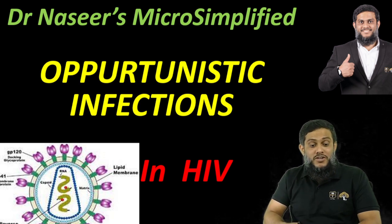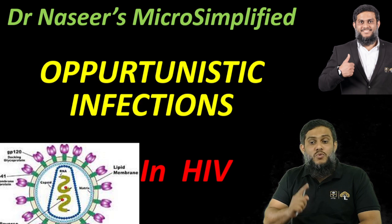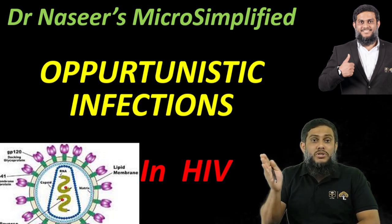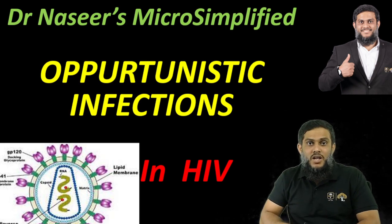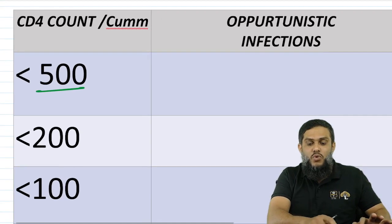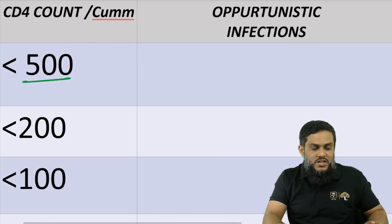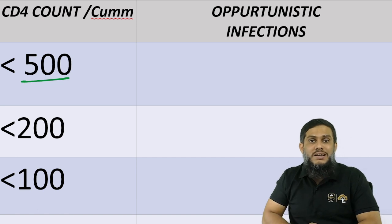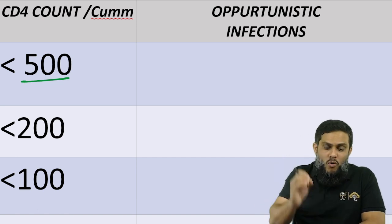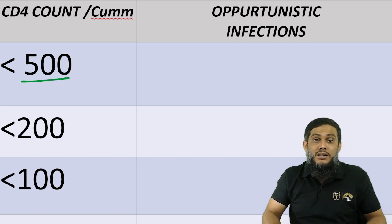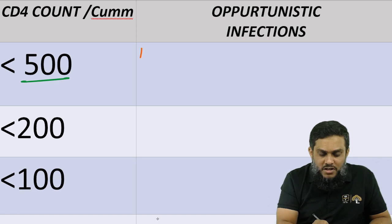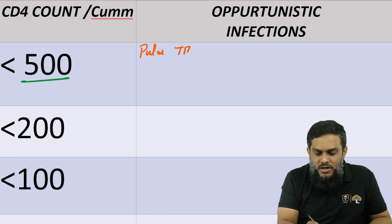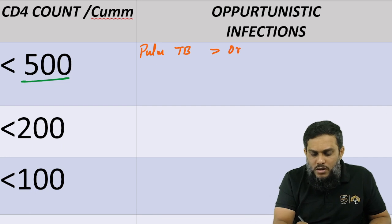Now, opportunistic infections related to CD4 count — one important thing to keep in mind: opportunistic infections are usually seen when the CD4 count falls below 500. So our cut point is 500. When CD4 count falls below 500, important infections include pulmonary tuberculosis and oral candidiasis.